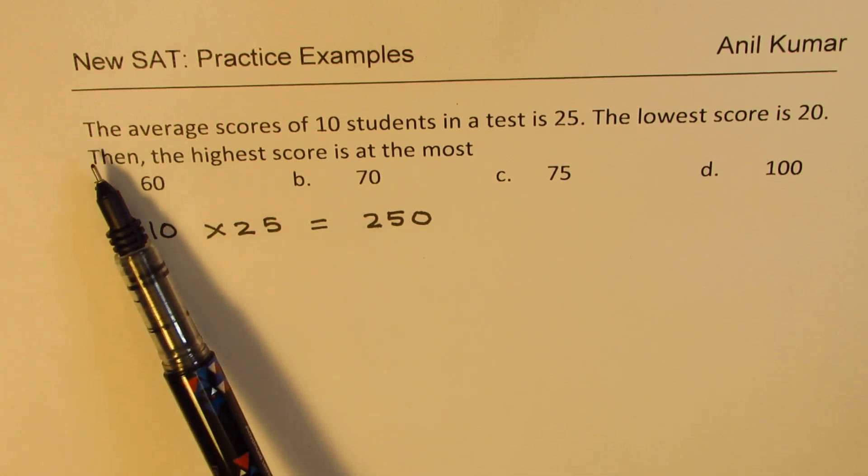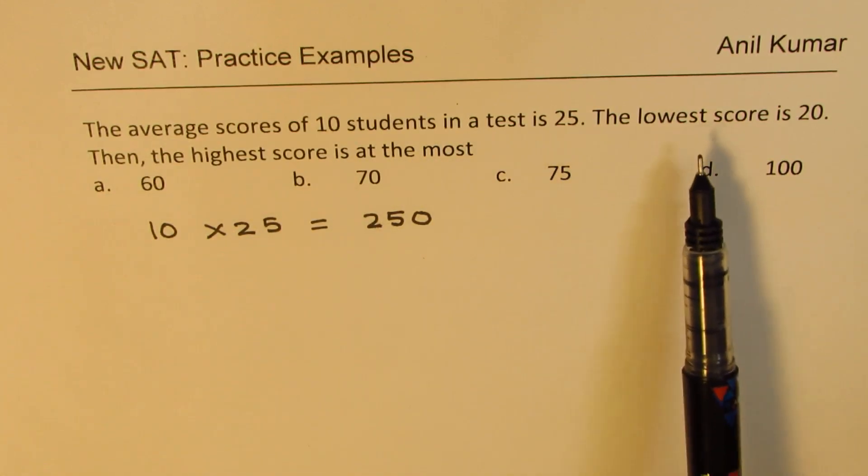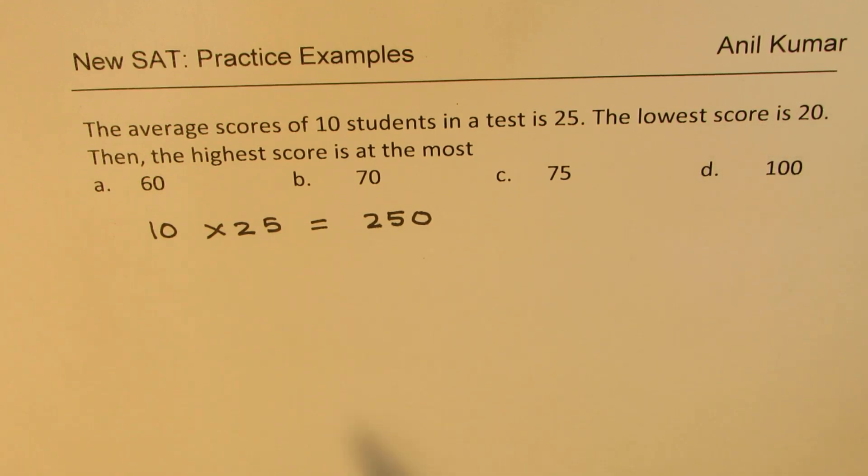So we'll continue reading. The average score of 10 students in a test is 25. The lowest score is 20. Then the highest score is at the most what? That is what we need to understand.